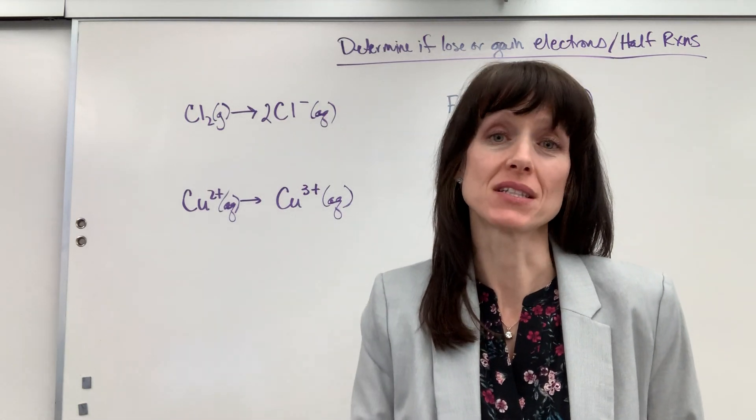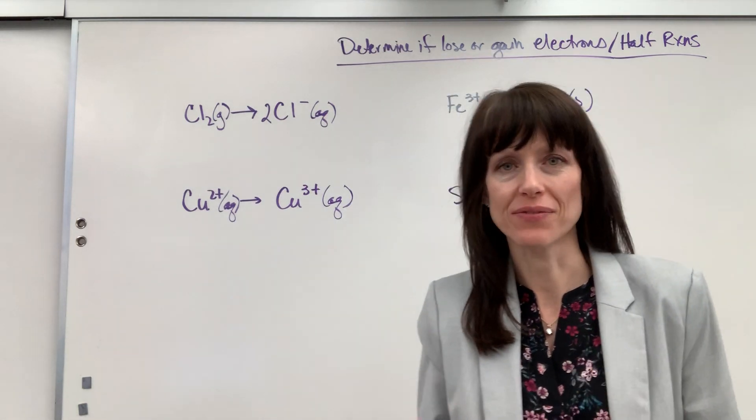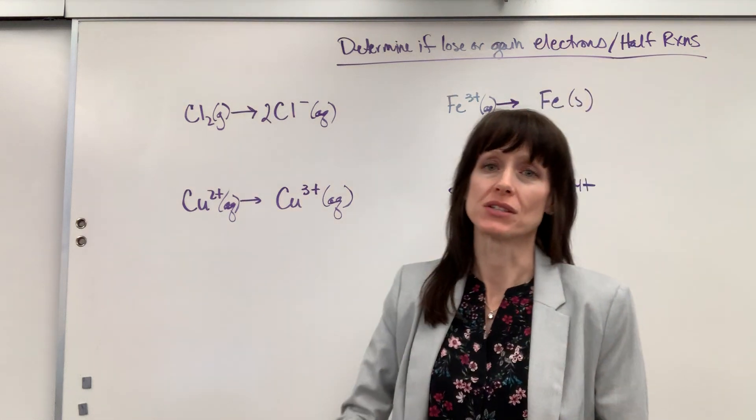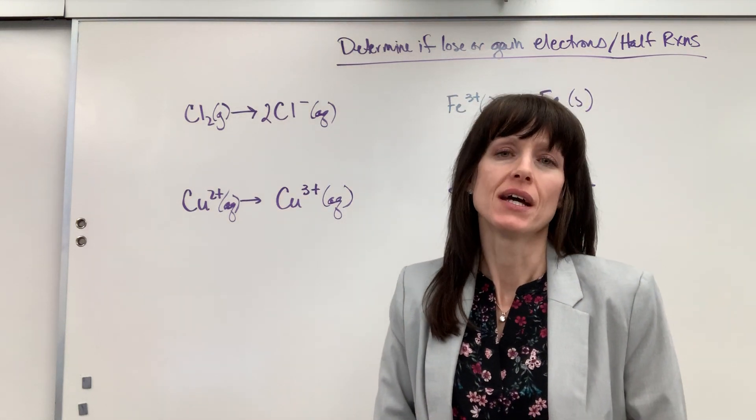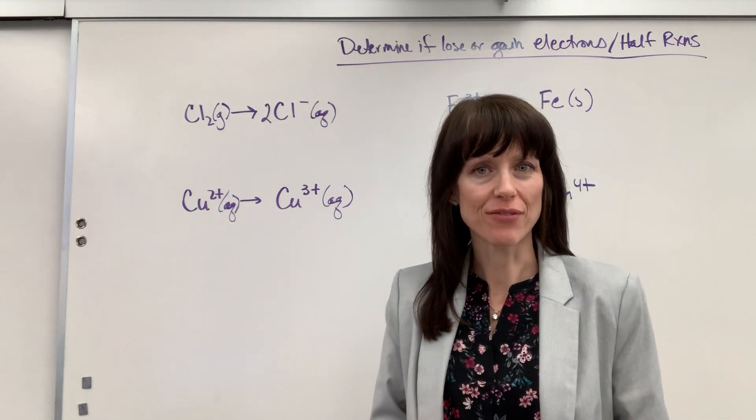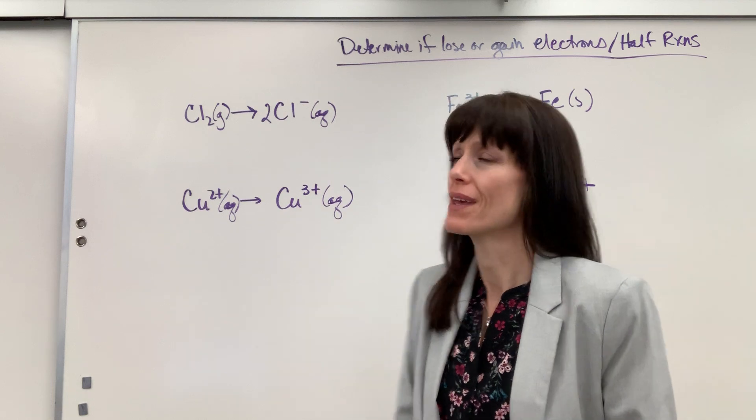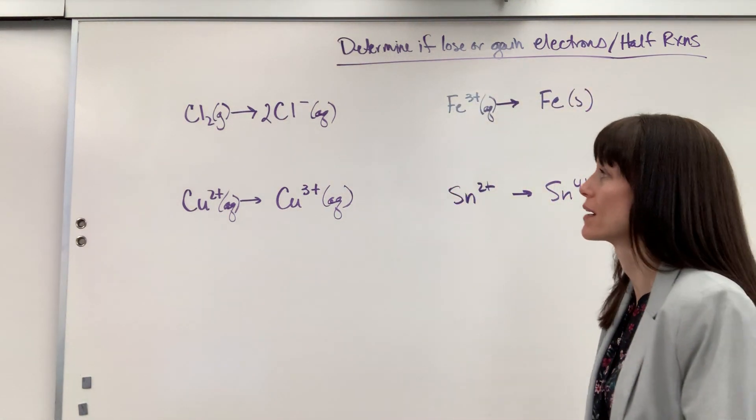Hi, I want to give you some practice doing two things. Number one, identifying: are these half reactions gaining or losing electrons? And number two, how to balance a half reaction just with electrons? Okay, so I have four examples up here.